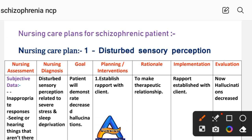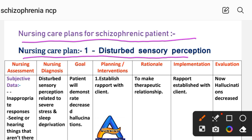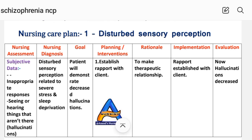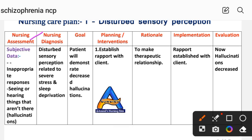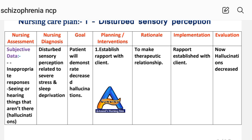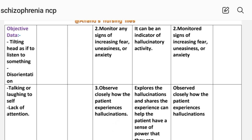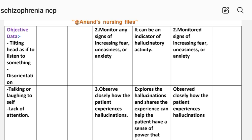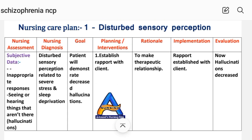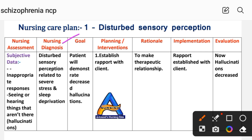Here is the nursing care plan for the schizophrenic patient. Care Plan Number 1: Disturbed Sensory Perception. In the nursing assessment, subjective data includes inappropriate responses and seeing or hearing things that are not there — hallucinations. Objective data includes tilting head as if listening to something, disorientation, talking or laughing to self, and lack of attention. The nursing diagnosis is: disturbed sensory perception related to severe stress and sleep deprivation. Goal: patient will demonstrate decreased hallucinations.